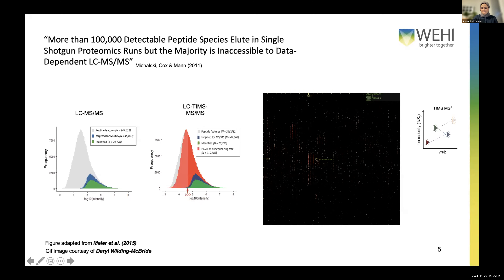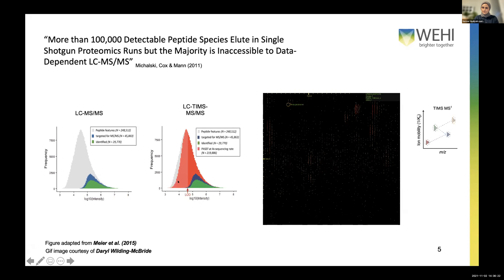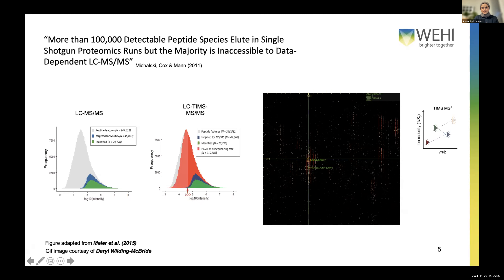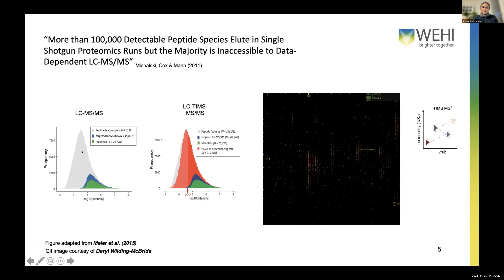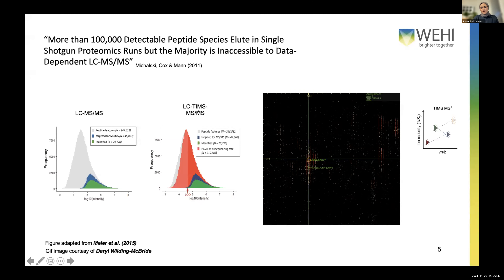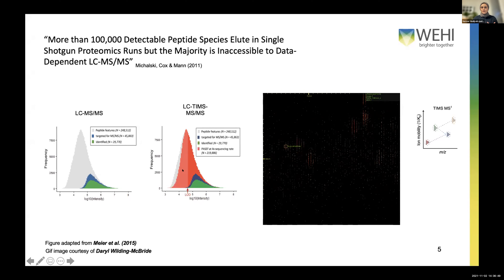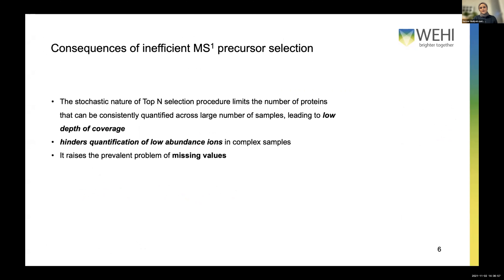The sequencing technology is still lagging behind and is not quite capable of detecting every single peptide species. This plot repeats the same point: in your LC-MSMS workflow, you are potentially detecting lots of peptide features or signals, but only a small green proportion of them are actually sequenced. With trapped ion mobility technology, you hope to increase the depth of sequencing, but in practice we're not quite there yet. The stochastic nature of this top-N selection procedure means we can't consistently quantify proteins and peptides across samples, particularly in large cohorts, and it limits our ability to quantify lower-abundance ions.